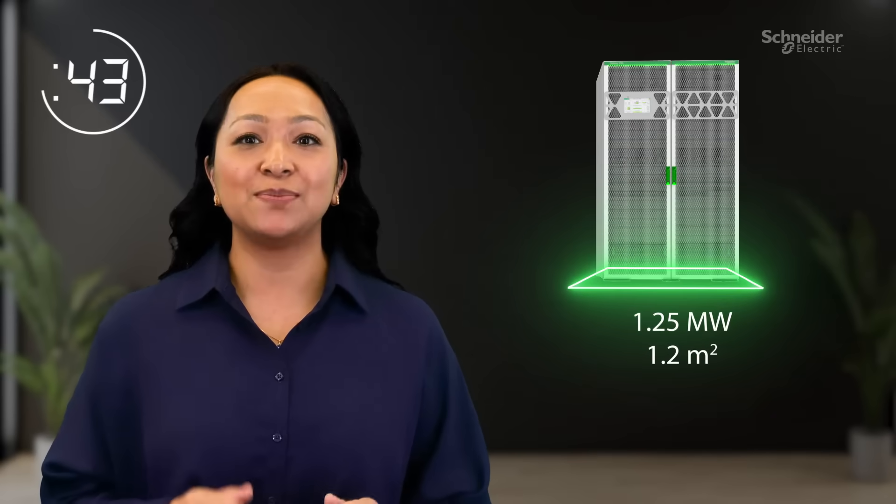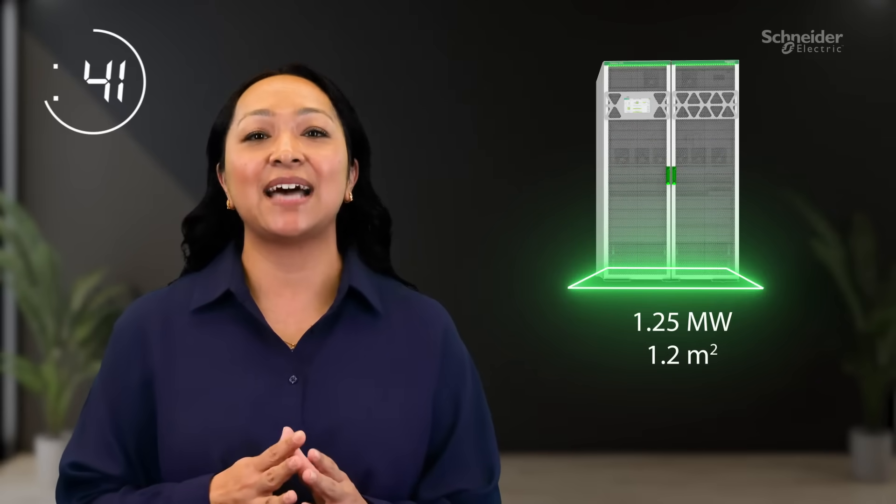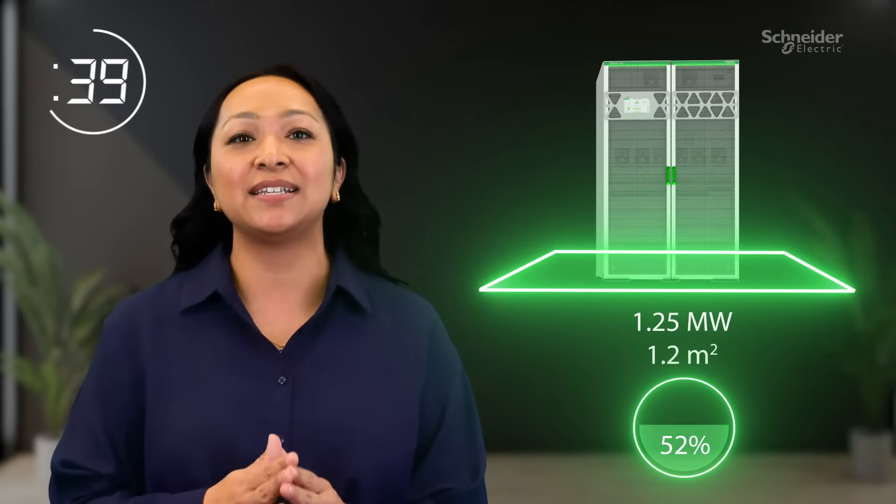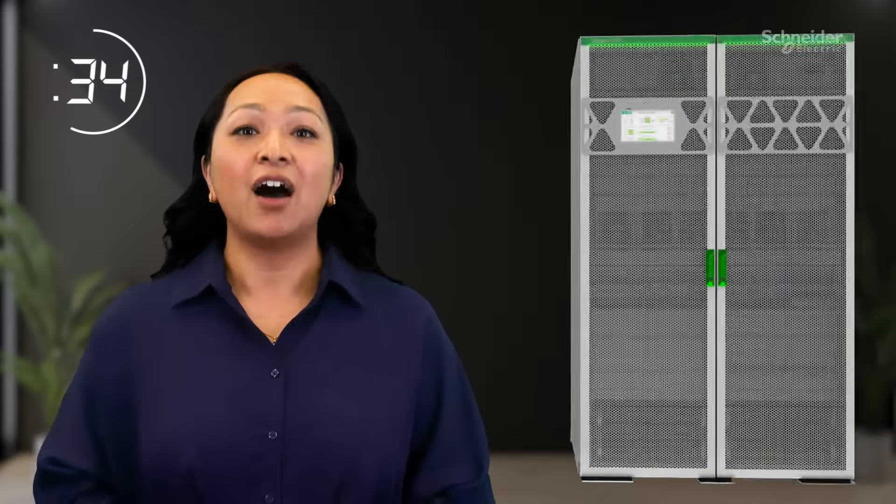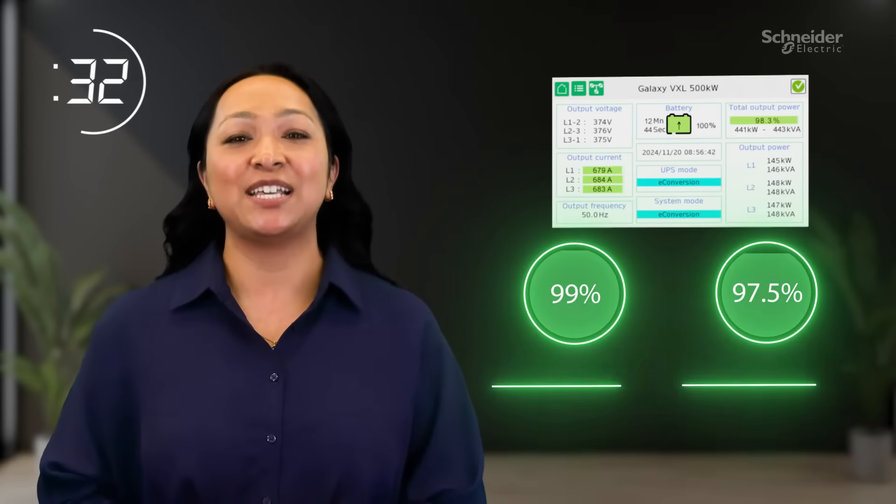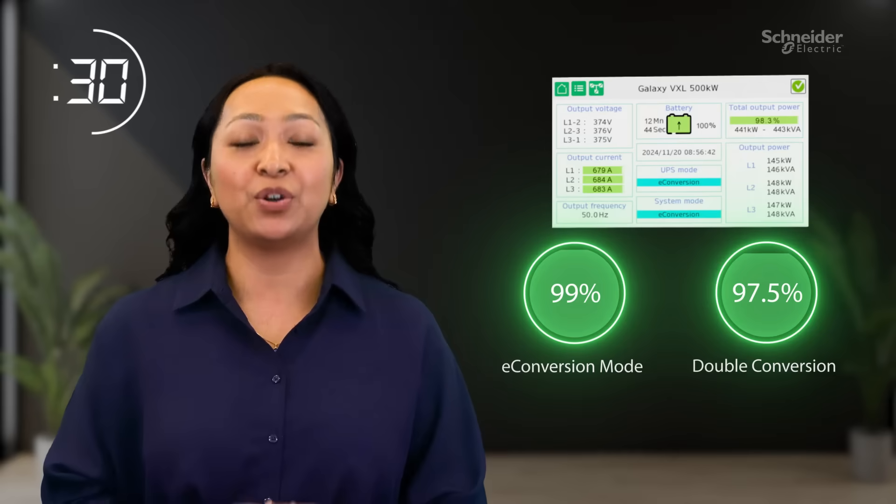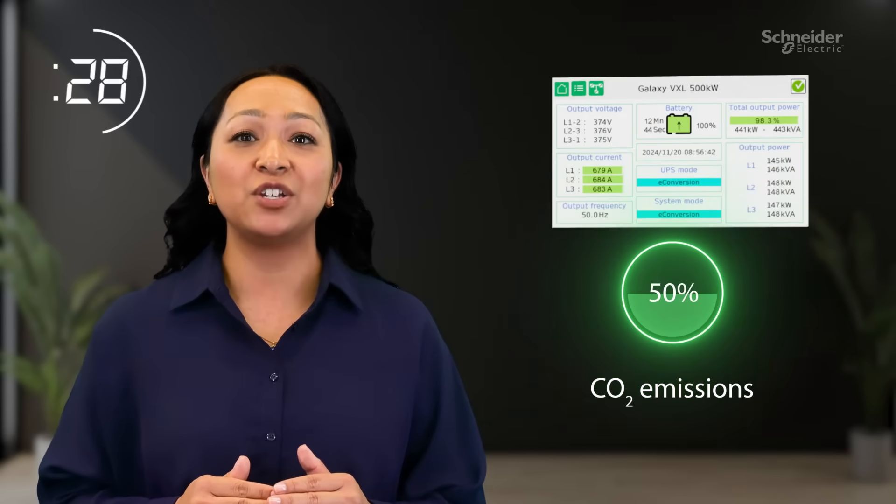At just 1.2 meters squared, its compact design saves up to 52% of valuable floor space when compared to three top manufacturers. Operating at up to 99% efficiency in e-conversion mode reduces the UPS carbon emissions by half.